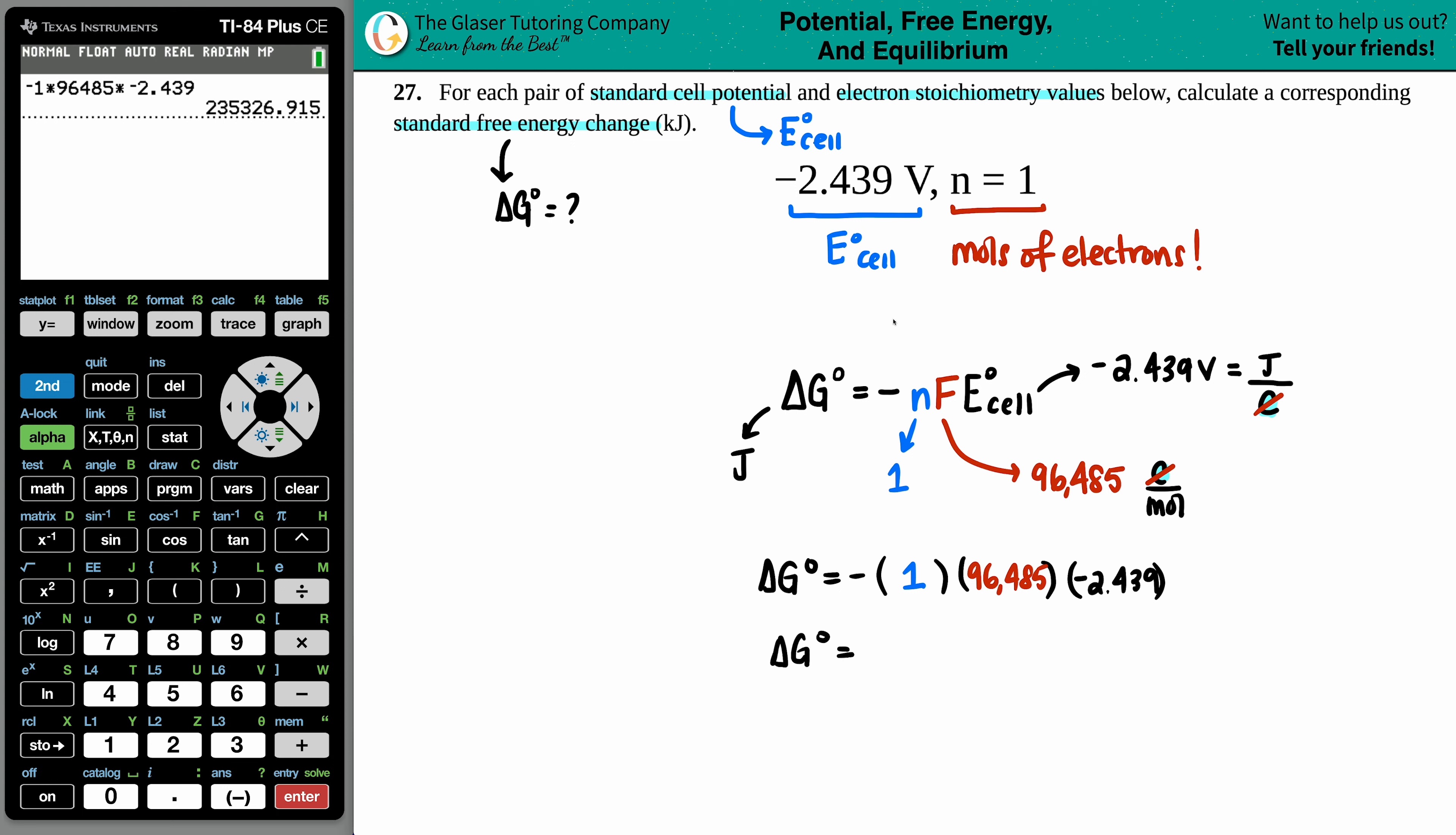I guess we'll use four sig figs. This n equals one is a specific value. It was not measured. It's not a measured value. It's just saying that there's one mole that was transferred. So I'm going to put in four sig figs here. So 235,300. And that's in joules.